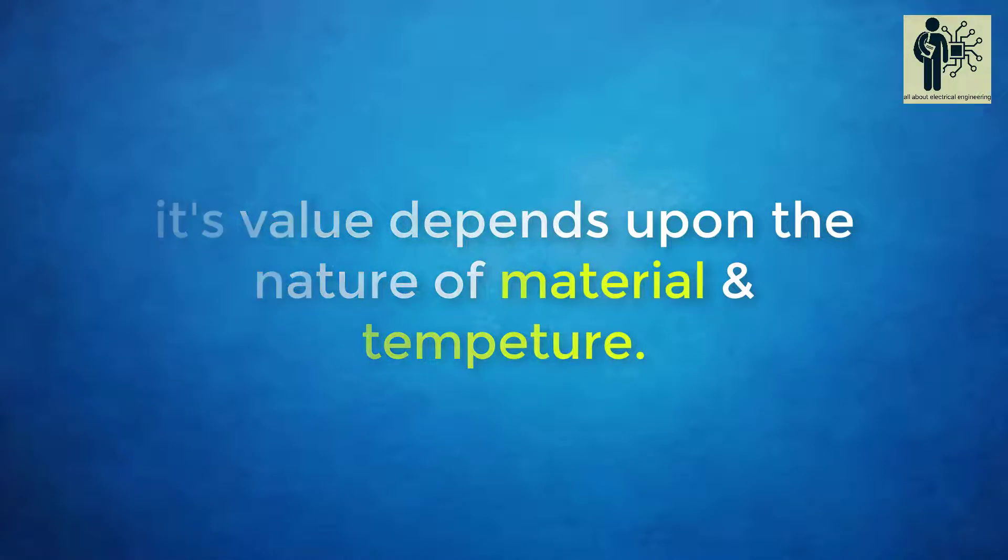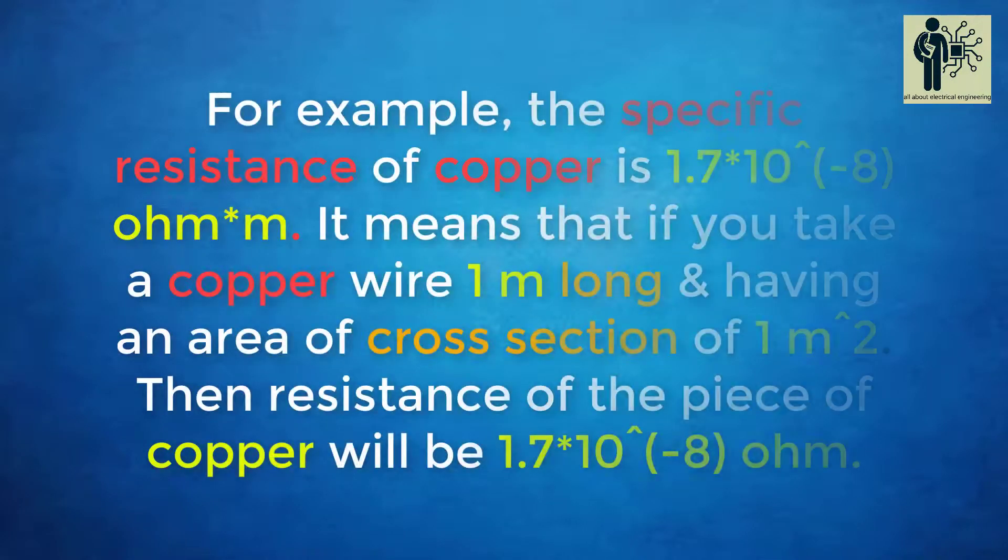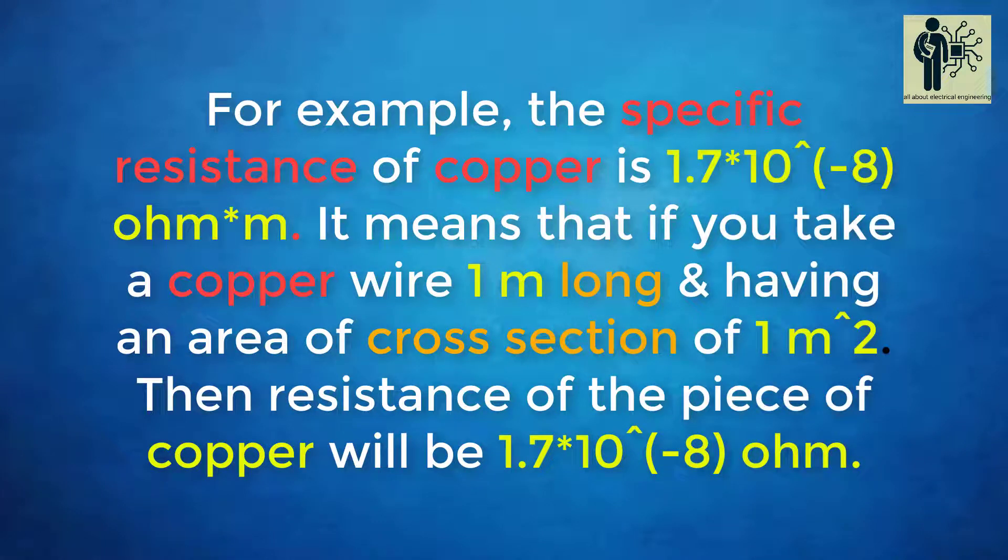For example, the specific resistance of copper is 1.7 × 10⁻⁸ ohm meter. It means that if you take a copper wire 1 meter long and having an area of cross section of 1 meter square, then resistance of the piece of copper will be 1.7 × 10⁻⁸ ohm.